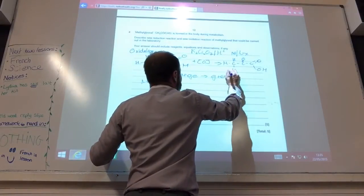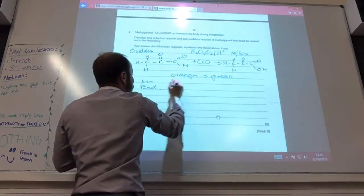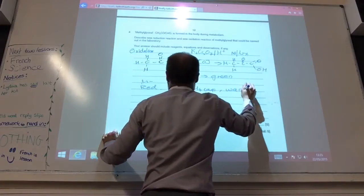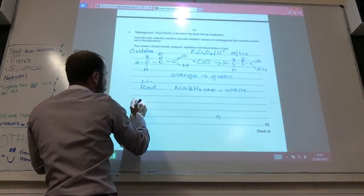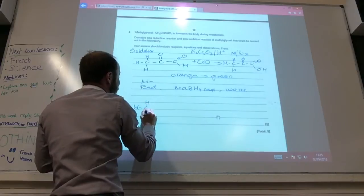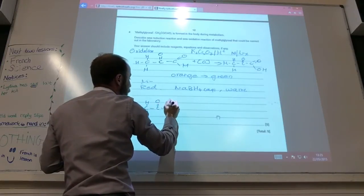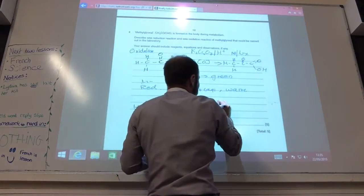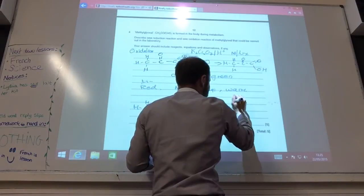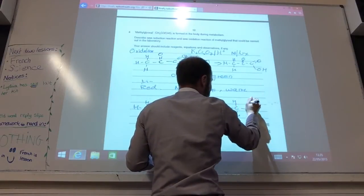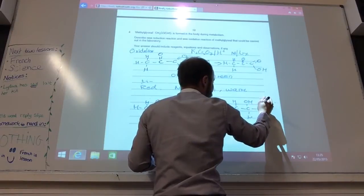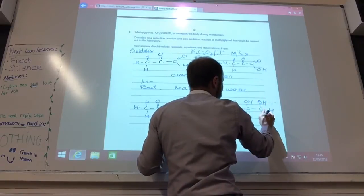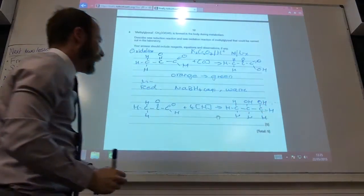So the ketone wouldn't change however my aldehyde would become a carboxylic acid and I would observe it going orange to green. For reduction I would add sodium borohydride, aqueous, warm. And then for this one, this is quite interesting because obviously it can reduce both the ketone and it can reduce the aldehyde. So I'm going to have four square bracket H which will knock my ketone to the alcohol and it will also knock my aldehyde to the alcohol as well.